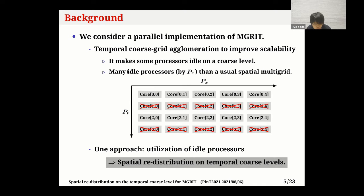The total number of idle processors is the number of temporal idle processors multiplied by the spatial parallelism Px. For example, this figure corresponds to 2 by 5 spatial parallelisms. In the case of temporal agglomeration, there are many idle processors on a coarse level. Therefore, in this presentation, we think about the possibility of utilizing idle processors.